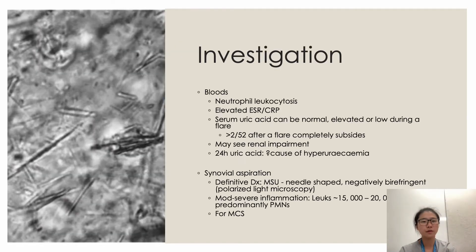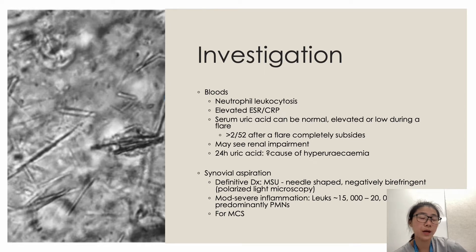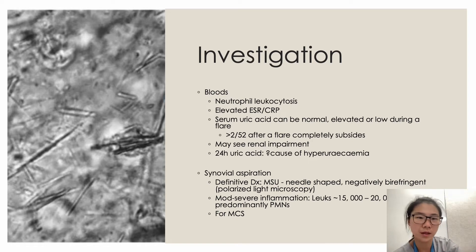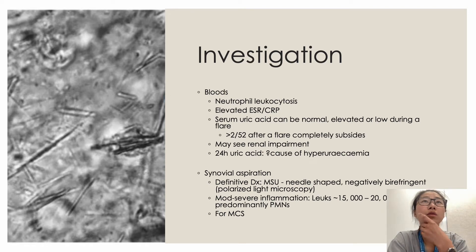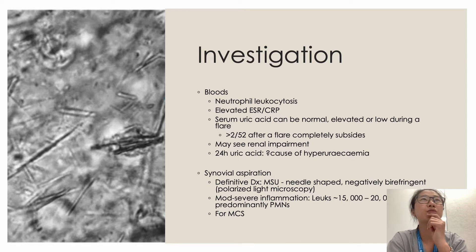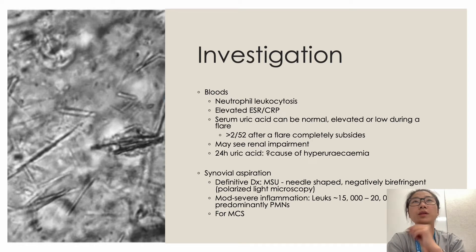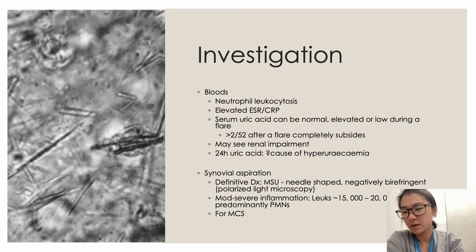For investigations, blood tests show neutrophilic leukocytosis with elevated ESR and CRP. However, serum uric acid levels may be normal, high, or low during an acute flare, so testing is most useful two weeks after. Associated renal impairment may also be present, and 24-hour uric acid measurement may be done to investigate causes. Definitive diagnosis is achieved through synovial aspiration, analyzing fluid for needle-shaped negatively birefringent crystals under polarized light microscopy. Joint fluid leukocytes will also be elevated, and fluid is sent for MCS to exclude concurrent septic arthritis.